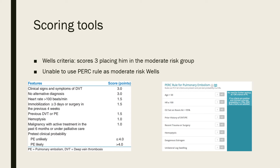Using the Wells score, James scores 3, placing him in the moderate risk group. He scores points for heart rate greater than 100 and for immobilization or surgery in the previous four weeks. It is difficult to assess clinical signs of DVT fully due to his boot, but he at least scores 3, placing him in the moderate risk group. The PERC rule cannot be used to rule out PE as he is moderate risk.